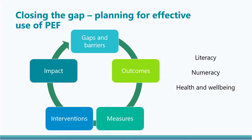PEF plans should focus on ensuring equity to bring about improvements in literacy, numeracy and health and wellbeing for pupils affected by poverty. Keeping this at the forefront of all PEF planning discussions and maintaining a relentless focus on closing the poverty-related attainment gap will help avoid mission creep and the use of PEF in ways that do not contribute to improving the educational outcomes of pupils affected by poverty. Today's presentation aims to build your skills and confidence in planning for PEF at each of these five stages.